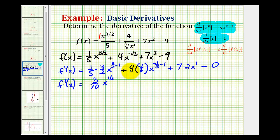Here we're going to have plus four times negative one-third, so we'll write this as minus four-thirds, x to the negative four-thirds, plus this will be fourteen x, and the last term is zero.